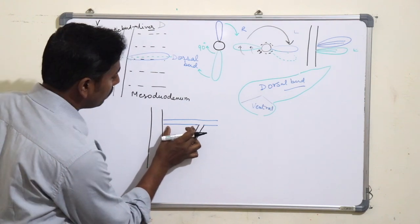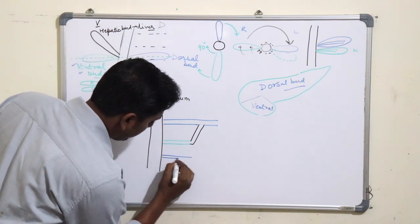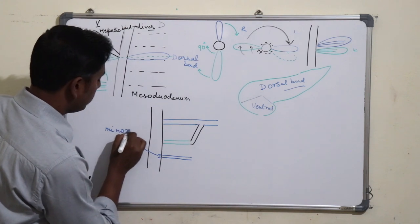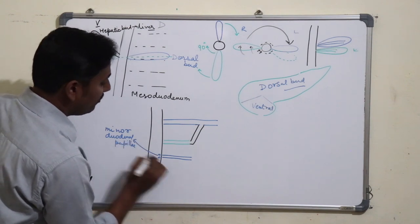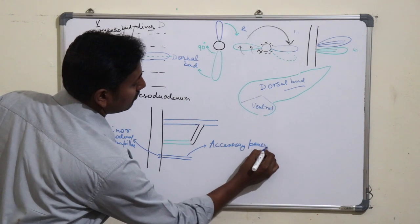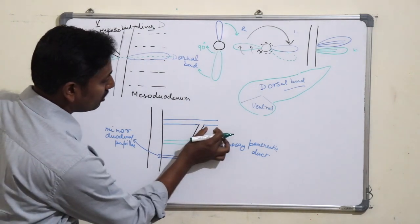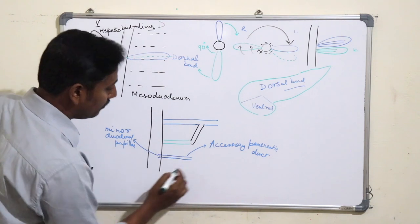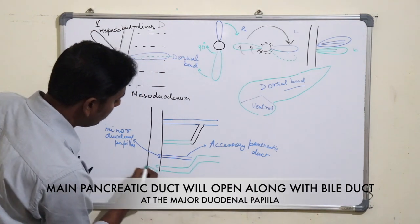The proximal portion of the duct of the dorsal bud will become narrow and will open at the level of the minor duodenal papilla in the duodenum, forming the accessory pancreatic duct. The remaining distal portion of the duct of the dorsal bud, the anastomosis, and the duct of the ventral bud will together form the main pancreatic duct, which will open at the level of the major duodenal papilla.